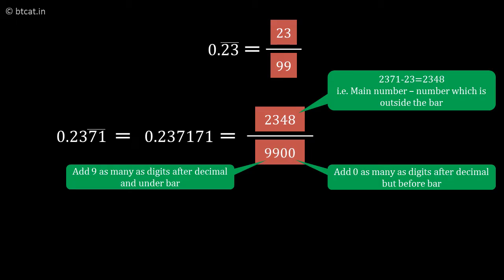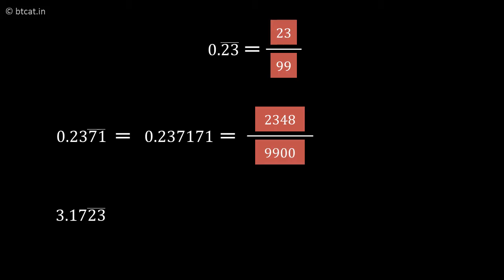Let's take one last question: 3.1723 bar, where the bar is only on 23. The special thing here is there's a digit before the decimal as well—3.1723 bar with the bar on 23.